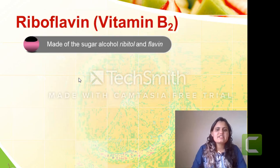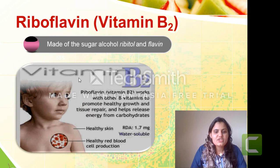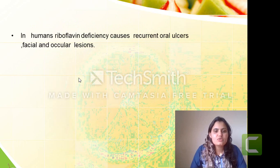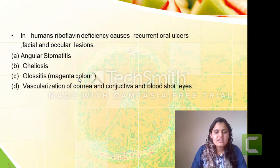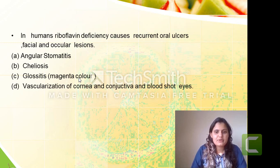Vitamin B2, another name is riboflavin. It is mainly required for healthy growth and tissue repair and it also helps in releasing energy from carbohydrates. If there is deficiency of riboflavin, it will lead to recurrent oral ulcers and facial and ocular lesions. The main symptoms will be angular stomatitis — inflammation of the oral cavity — and cheilosis, meaning cracking of lips; glossitis, inflammation of the tongue leading to a magenta color. It will also lead to vascularization of the cornea and the conjunctiva, causing a bloodshot red eye appearance.